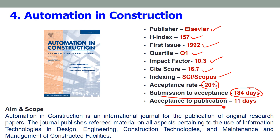After acceptance, your paper will be published online within 11 days. The journal publishes refereed material on all aspects of information technology use in design, engineering, construction technology, maintenance, and management of constructed facilities. Related to construction and construction management you can submit articles, but it has a very low acceptance rate. It is one of the best world-class journals in the field of automation in construction.